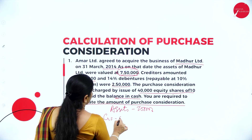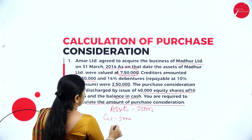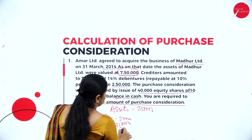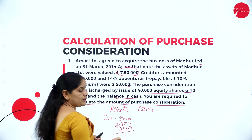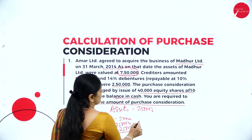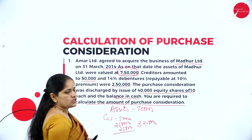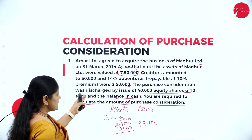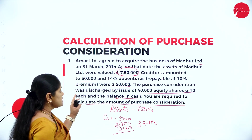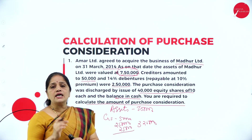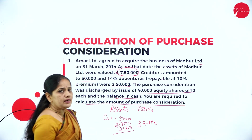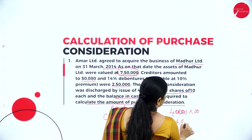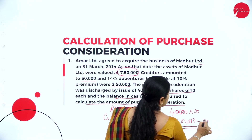The creditors are amounting to rupees 50,000 and debentures are repayable at a premium of 10%. So the value of debentures is 2 lakhs 50,000 and premium will be 25,000, making total payment for debentures 2 lakhs 75,000. Adding 50,000 for creditors, total liabilities come to 3 lakhs 25,000. The total asset value is 7 lakhs 50,000. They are issuing 40,000 equity shares of rupees 10 each, so the value of equity shares issued is 4 lakhs.